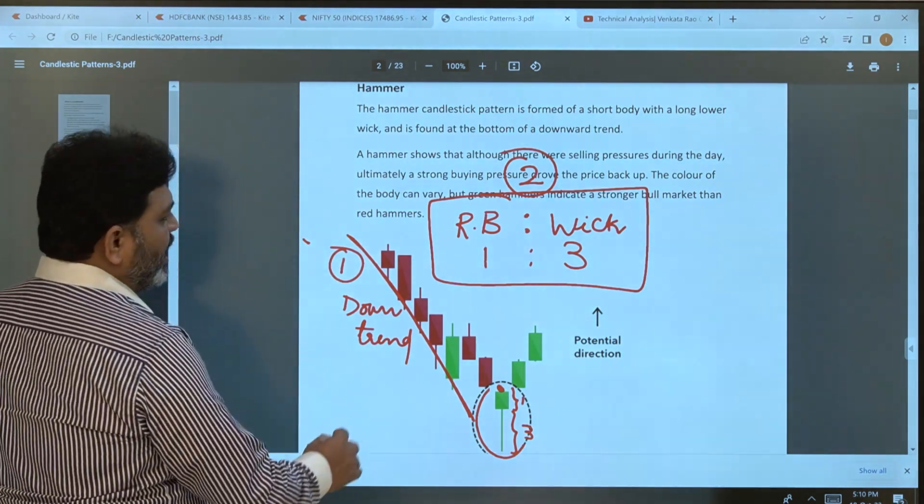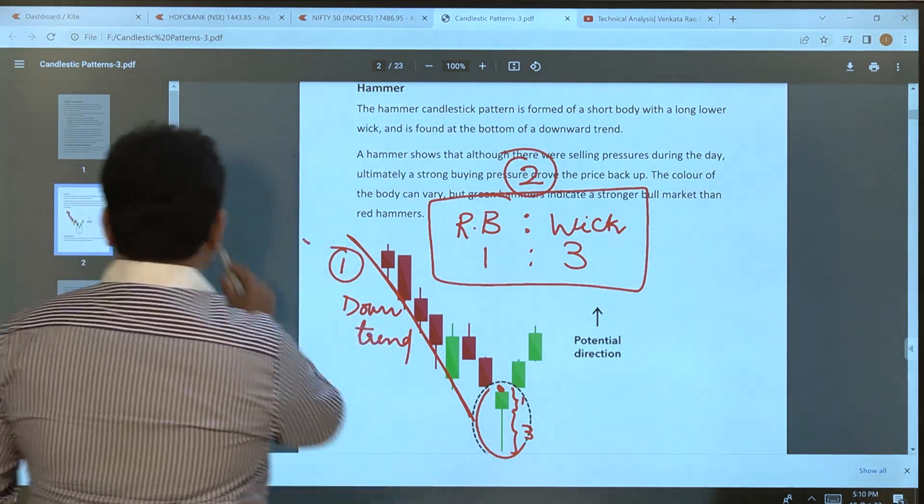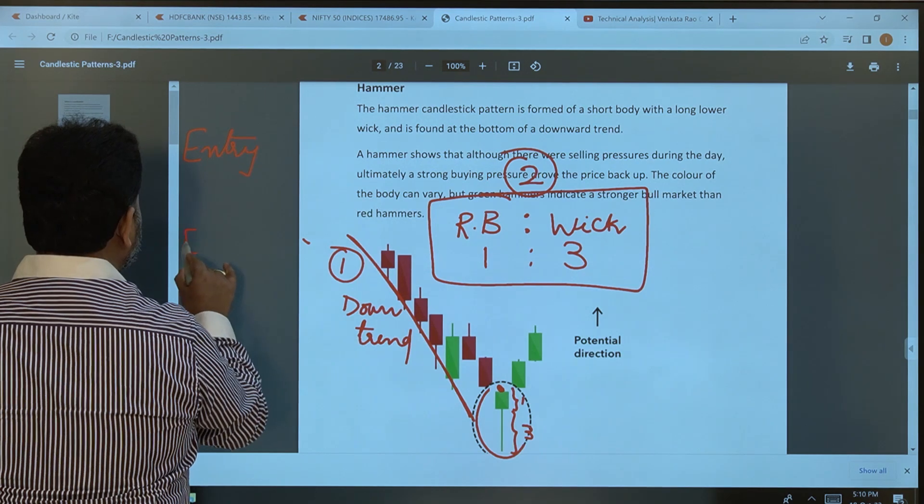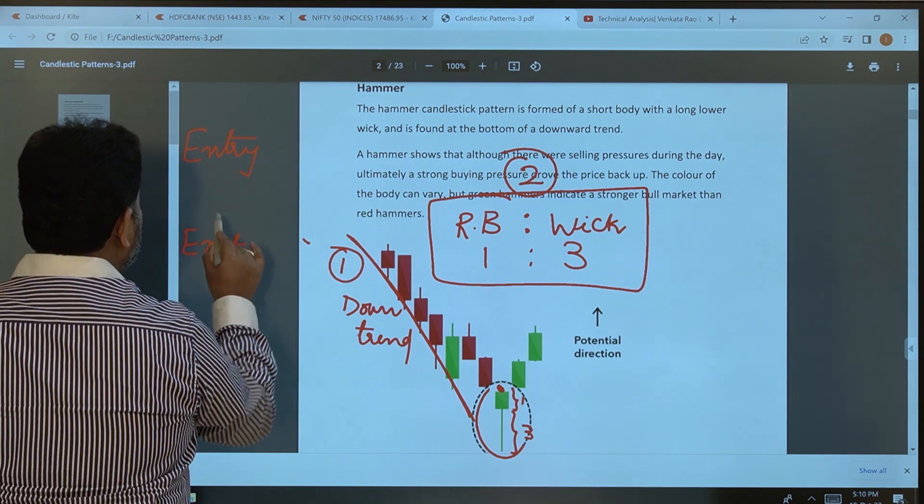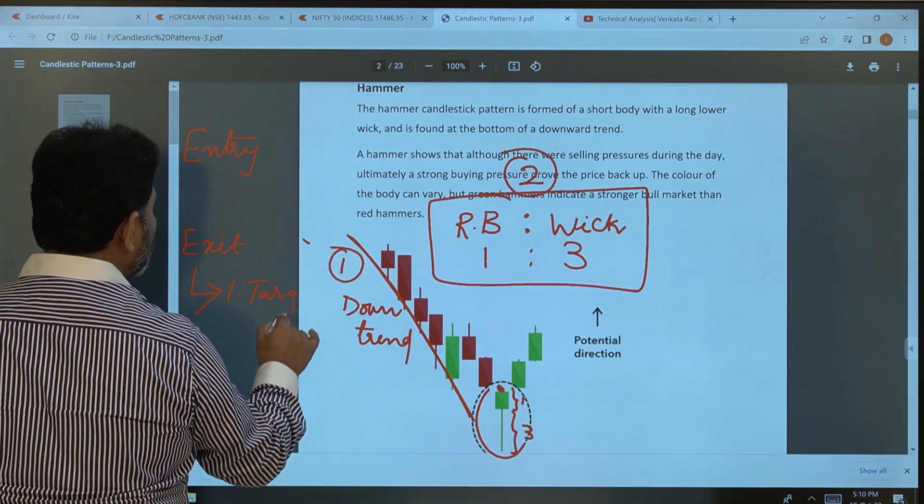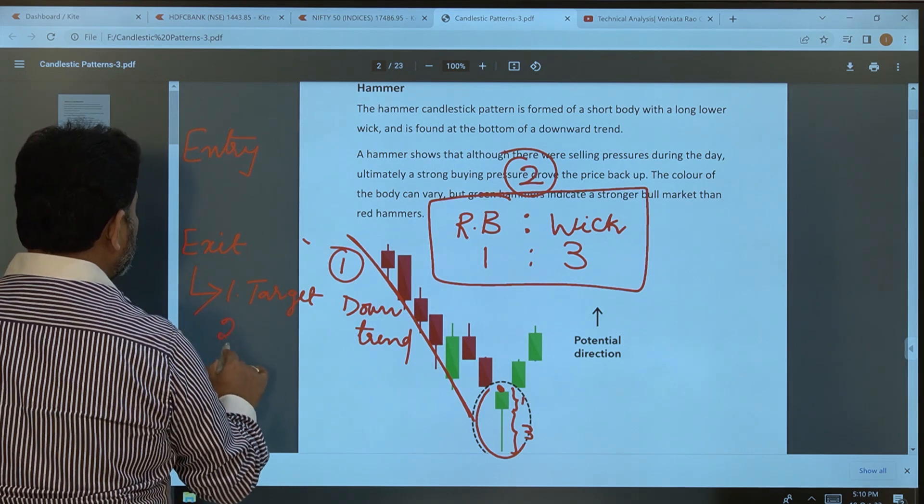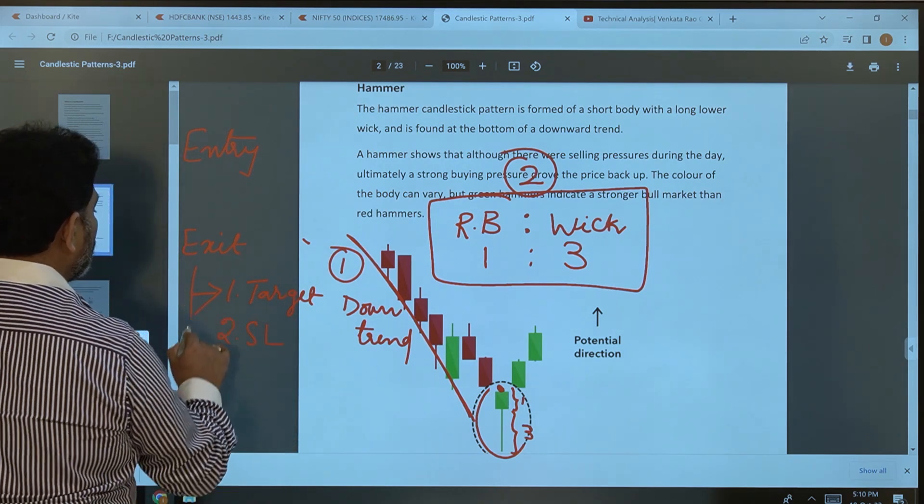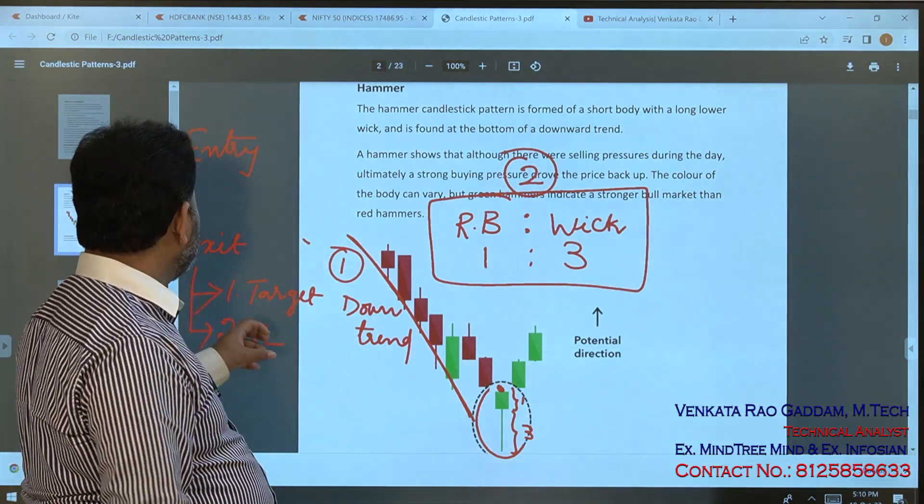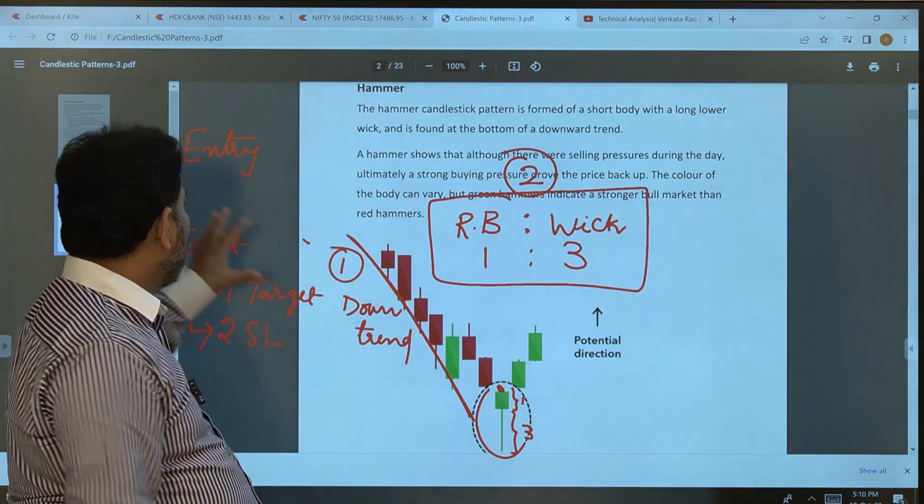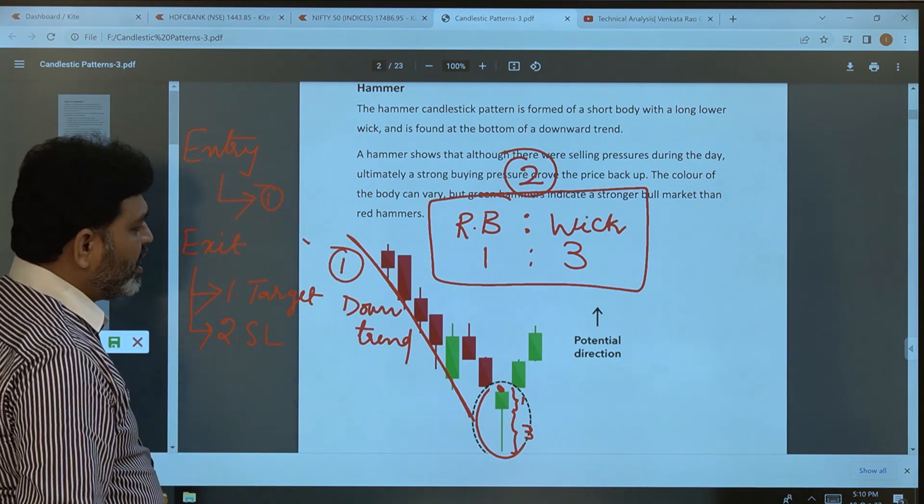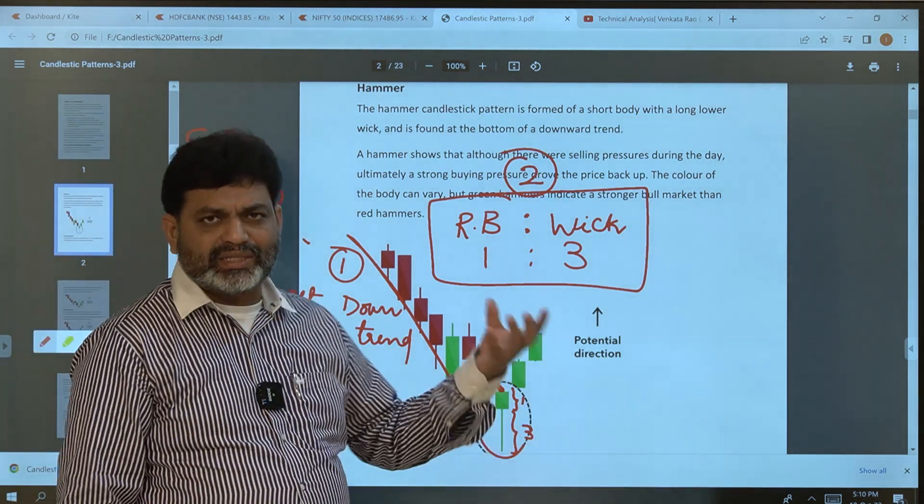Next is entry and exit. For exit, there are two options: either target or stop loss. Target and stop loss - these two we need to decide along with entry. We need to decide where to enter, where the target is, and where the stop loss is.